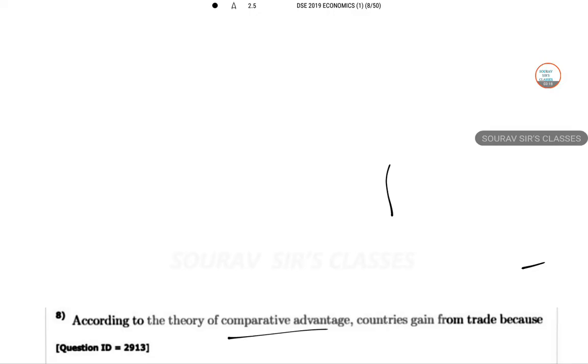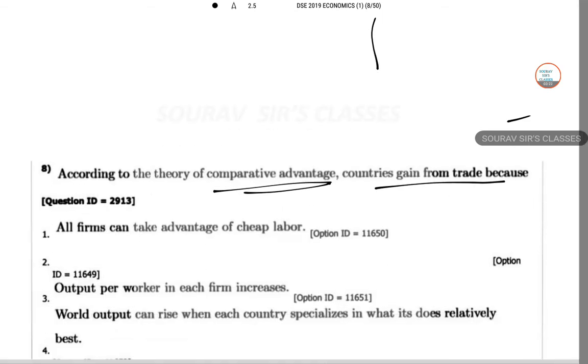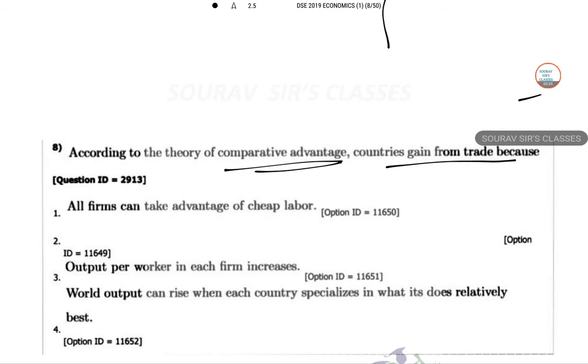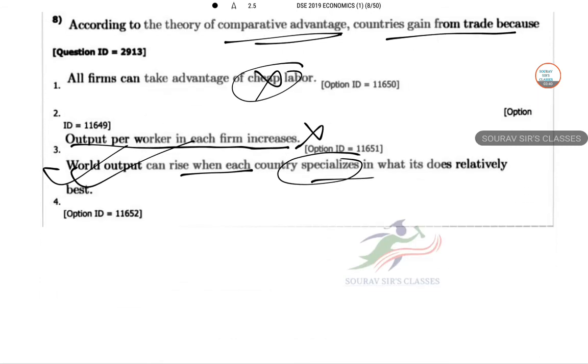So according to the theory of comparative advantage, countries gain from trade because of what reason? All firms can take advantage of cheap labor, no, if it is abundant only. Output per worker in each firm increases, not always. World output can rise when each country specializes in what it does relatively best. So this is the correct answer. Next one.